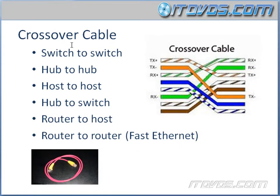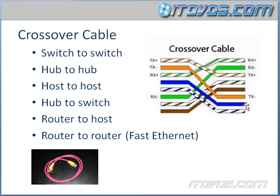The next type is a crossover cable. The colors don't technically matter — it's how they match up on the ends. The first wire at one end goes to the third position on the other end. The second goes to the sixth position. The third goes to the first position. The sixth goes to the second position. The seventh goes to the fourth position, and the last goes to the fifth position.